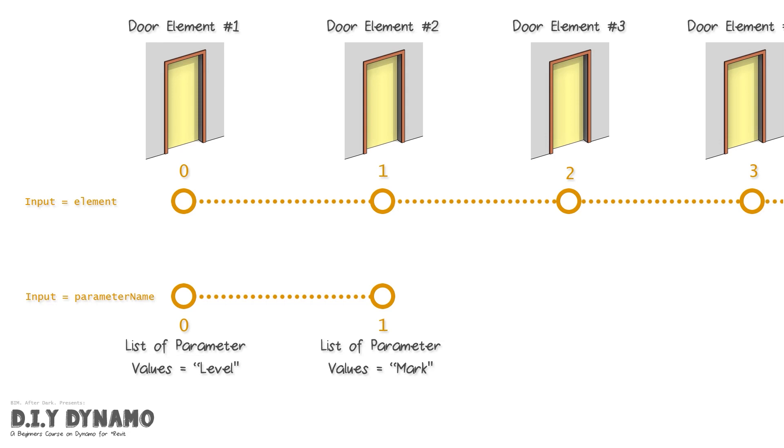So for example, levels might be level one, level two, level three, level four, and number two might be our marks, which would be our door tags.